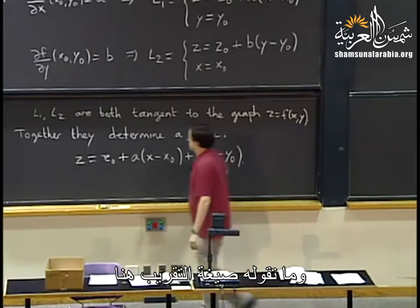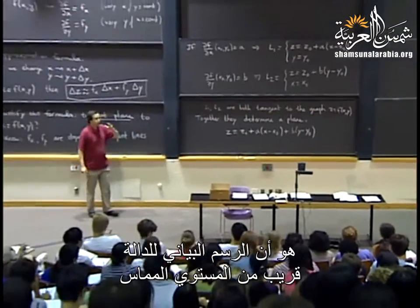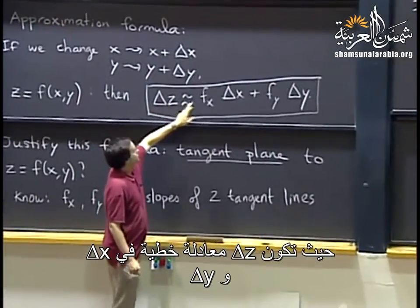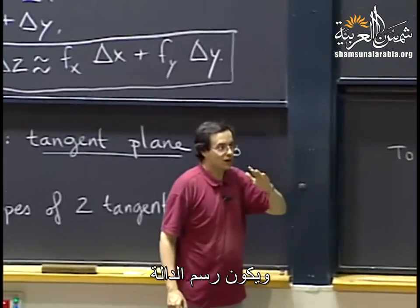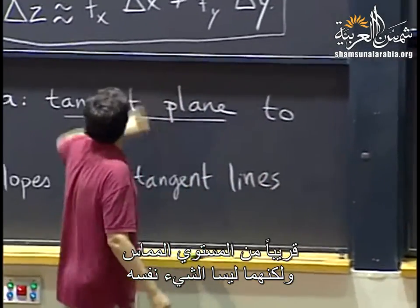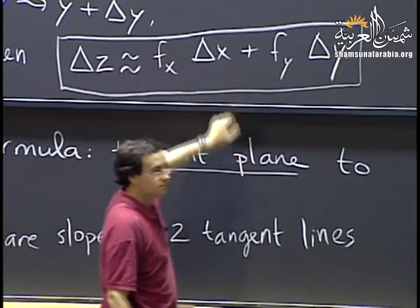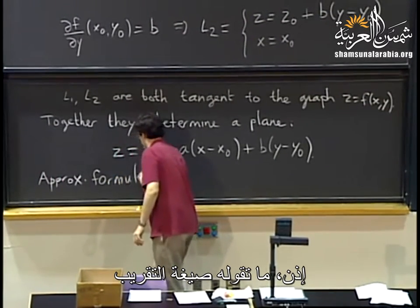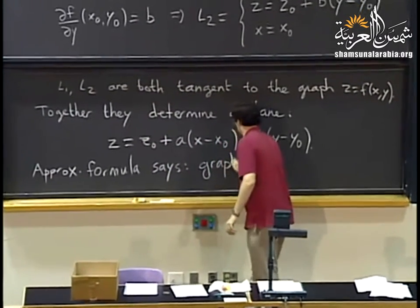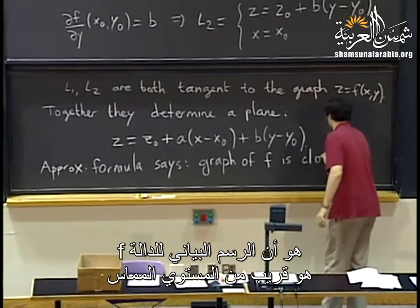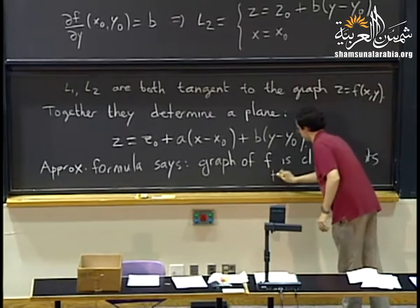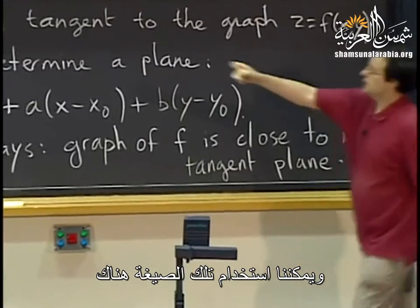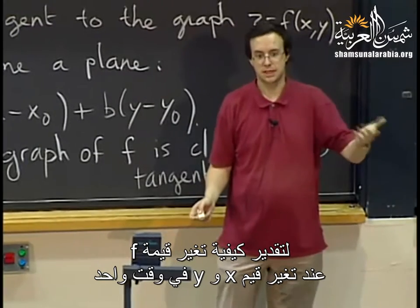That is how we get the tangent plane. What the approximation formula says is that the graph of a function is close to the tangent plane. If we were moving on the tangent plane, this would be an actual equality — delta z would be a linear function of delta x and delta y. The graph of a function is near the tangent plane, but it is only an approximation for small delta x and small delta y.